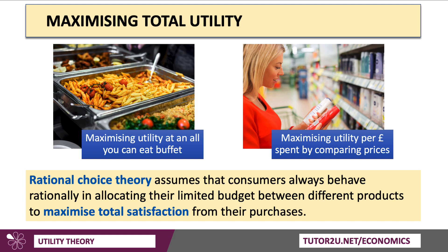Rational choice theory assumes that consumers always behave rationally in allocating their limited budget between different products, looking to maximise satisfaction from their purchases. Once you've paid to go to an all-you-can-eat buffet, the price doesn't vary if you have an extra helping or an extra course. So in theory, you should gorge yourself and continue to eat up to the point where marginal utility is zero.